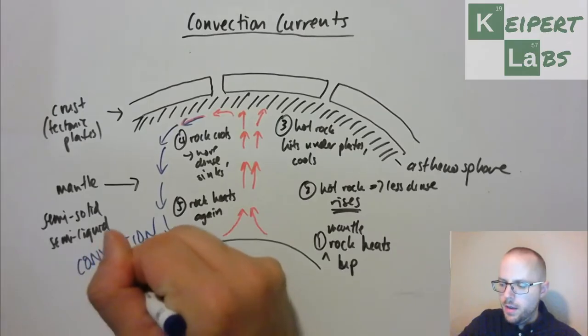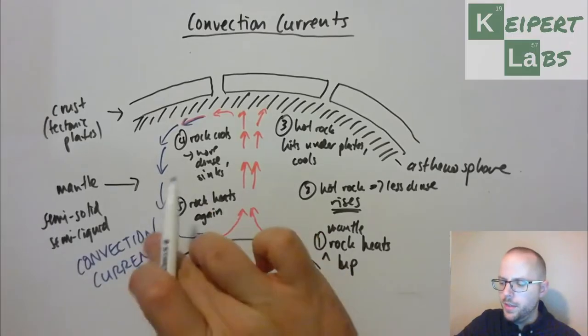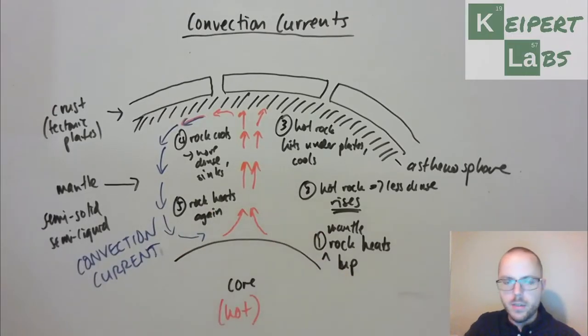Now convection currents are not limited to the rock inside the Earth. That's what happens to make a hot air balloon rise. It's what we notice if you have a pan of boiling water on the stove, that the water is churning around. You've probably learned about it back in year eight, looking at this idea of heat transfer and heat transfer by convection, this movement of a fluid that's unevenly heated.